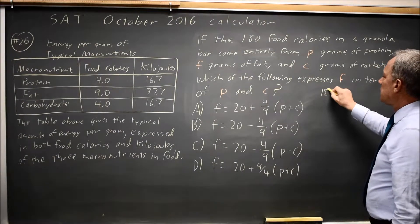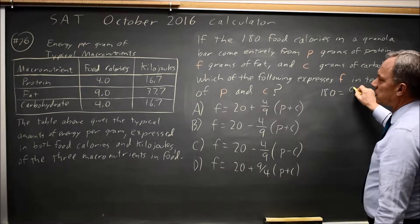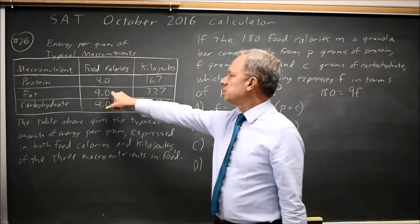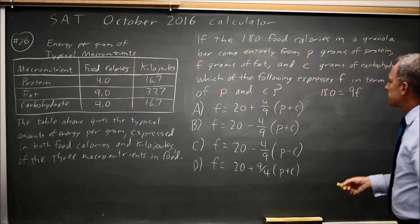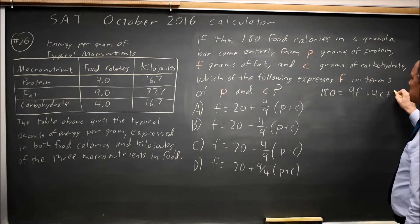So 180 equals 9F, because it's 9 calories for each gram of fat, and F is the number of grams of fat, plus 4C plus 4P.